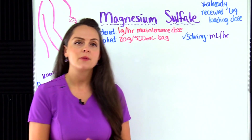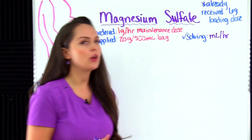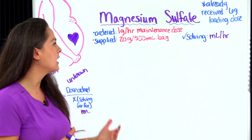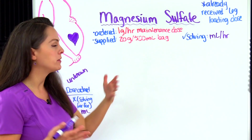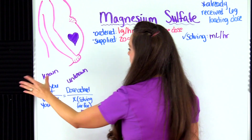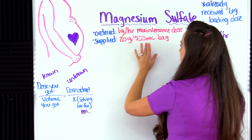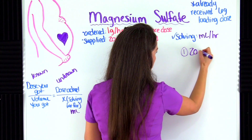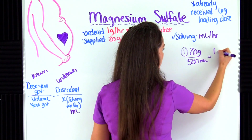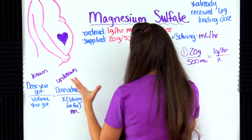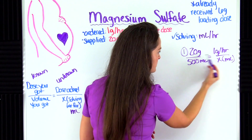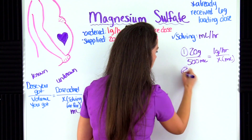Problem 2: a patient who is 29 weeks pregnant with eclampsia has already received a six gram loading dose of IV magnesium sulfate. The healthcare provider now wants a one gram per hour maintenance dose, and you're supplied with a bag that reads 20 grams per 500 mL. You need to determine the milliliters per hour. We create our known ratio — 20 grams over 500 milliliters — and set it equal to the unknown ratio: one gram over x. Before cross multiplying, confirm units match: grams and grams, milliliters and milliliters — good.